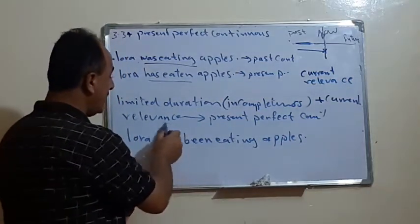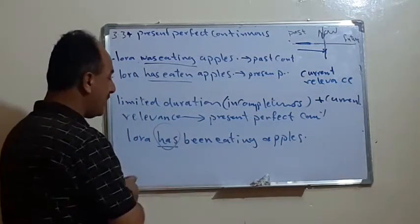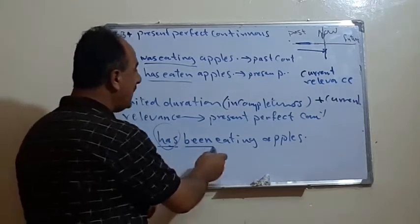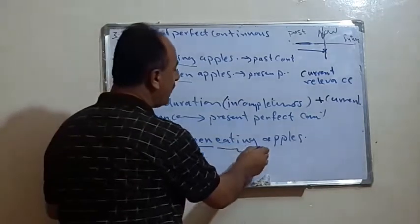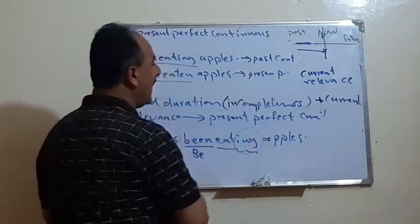Has, this for perfective. You know, when we use perfect, we use has or have. And been means what? Means is or was. This is for the B and this for what? For the continuity at NG.